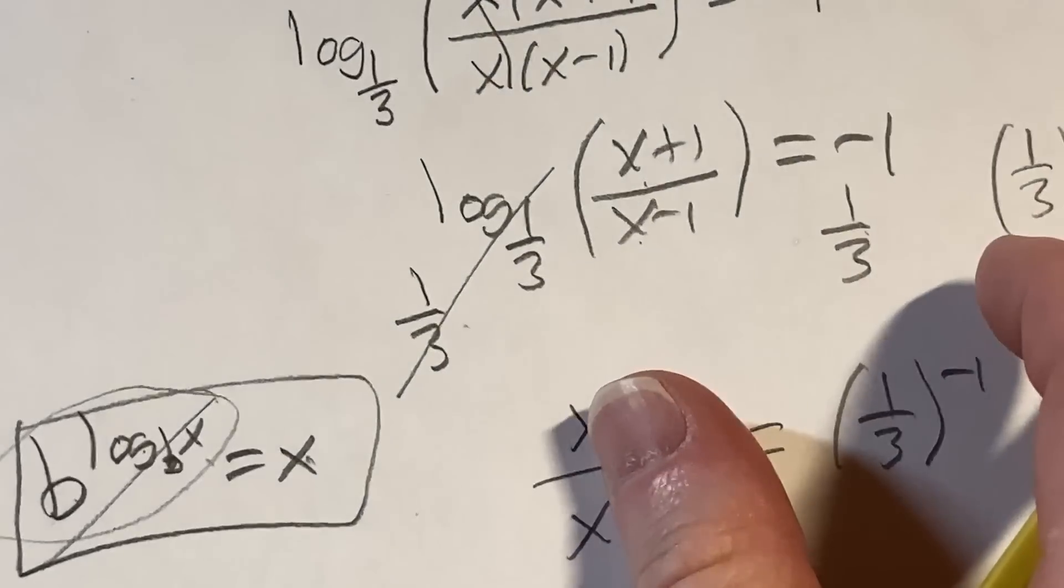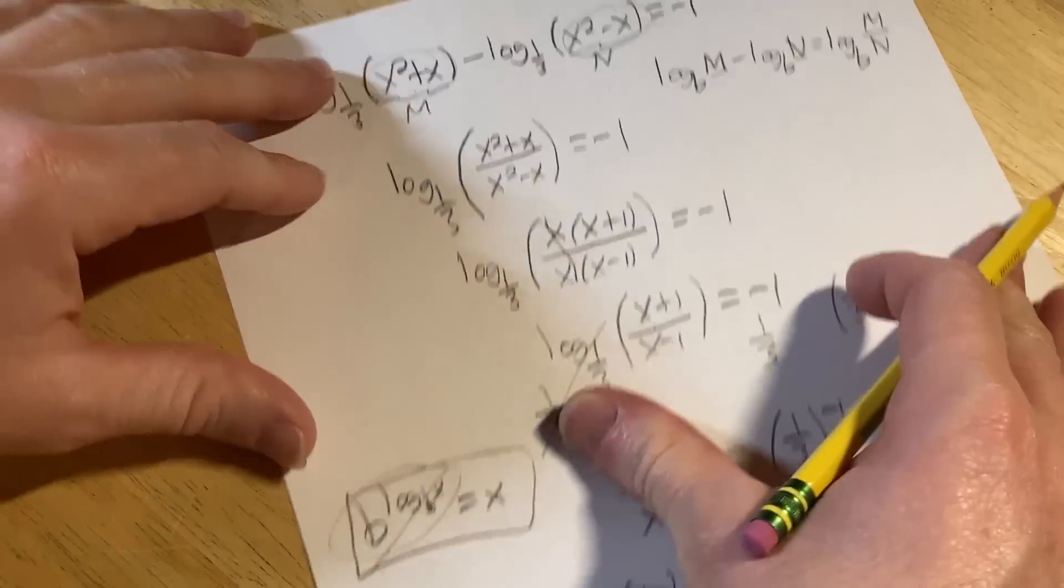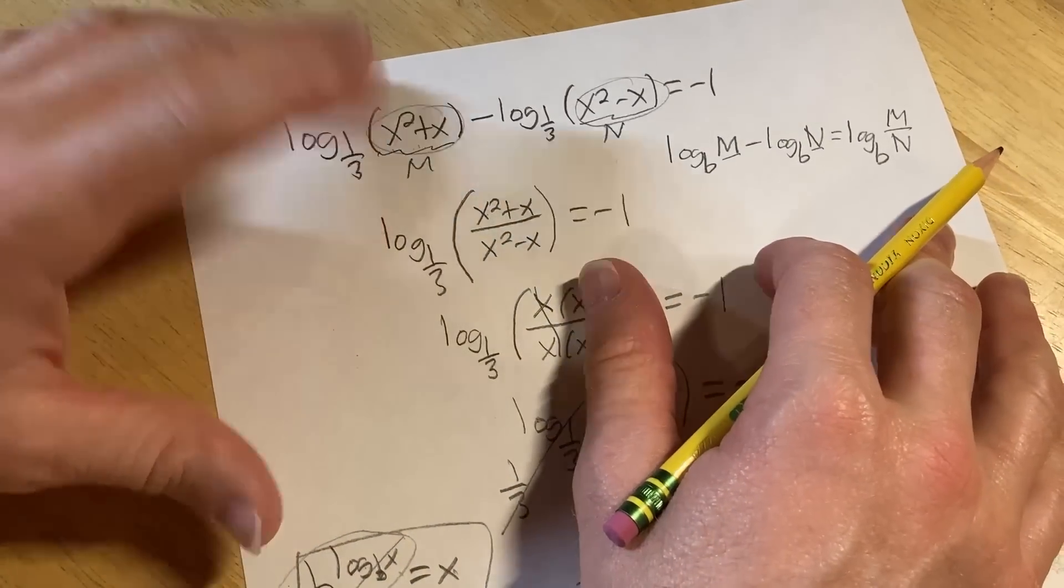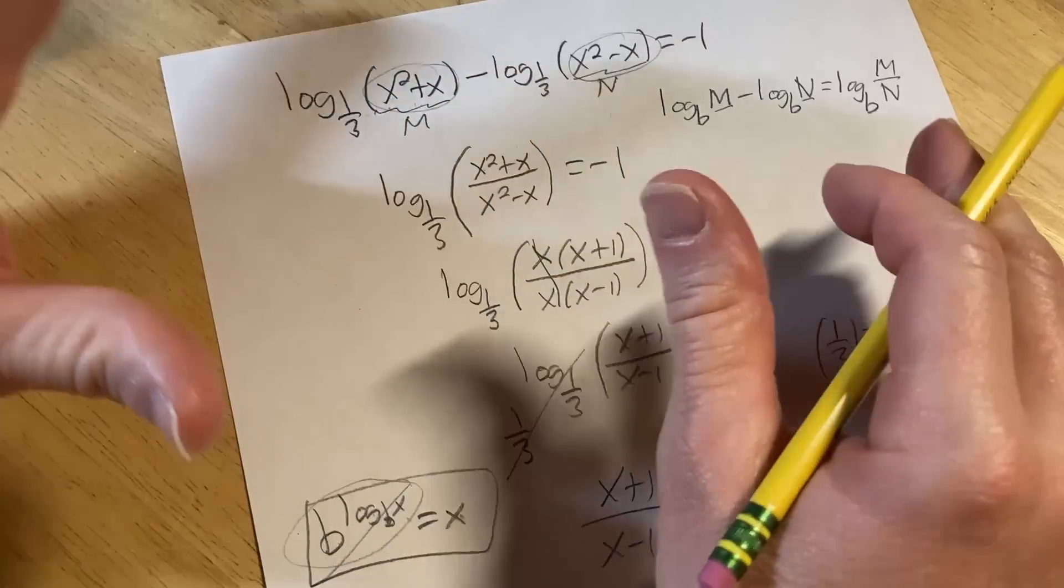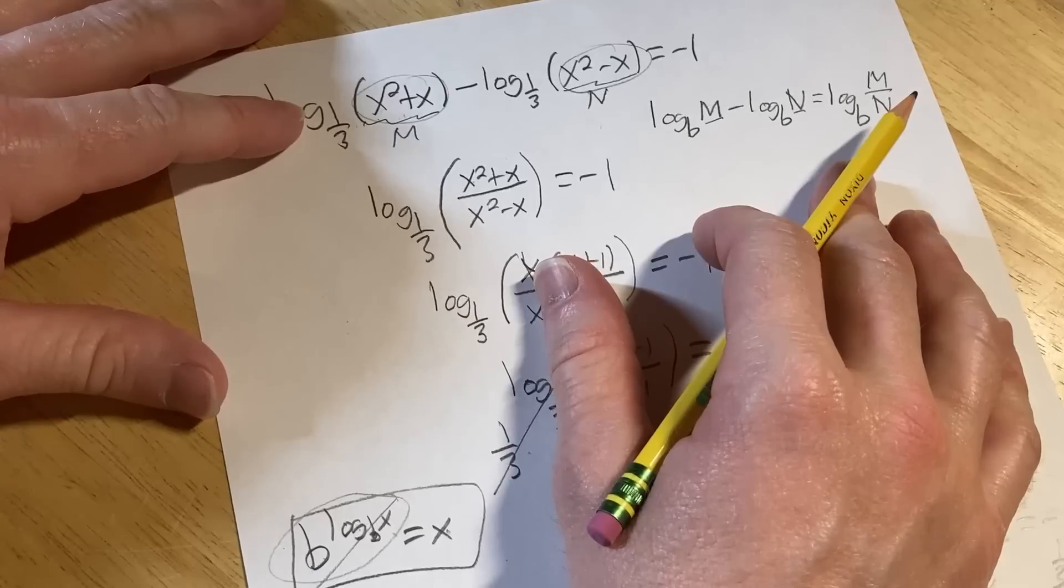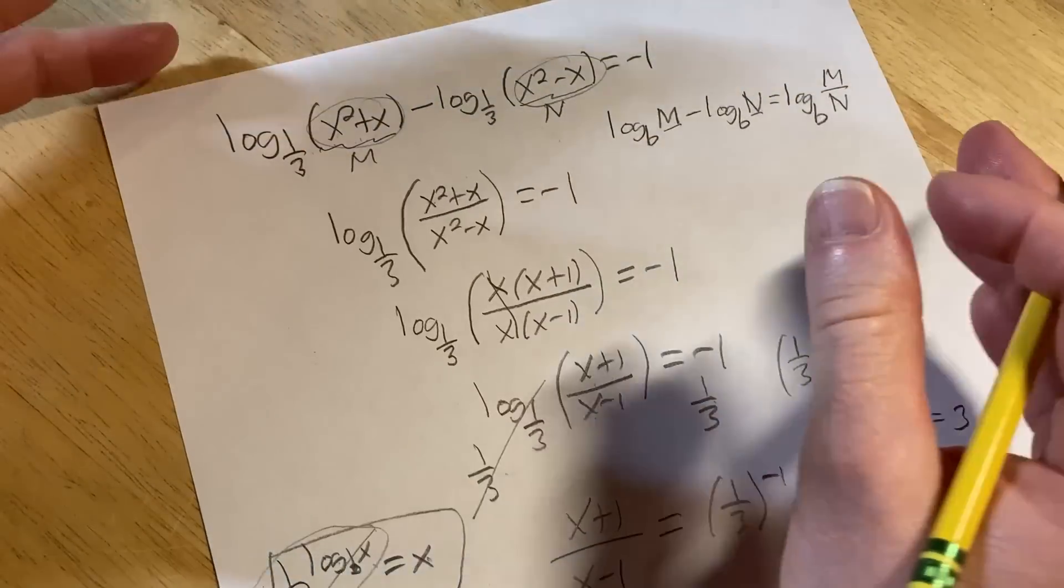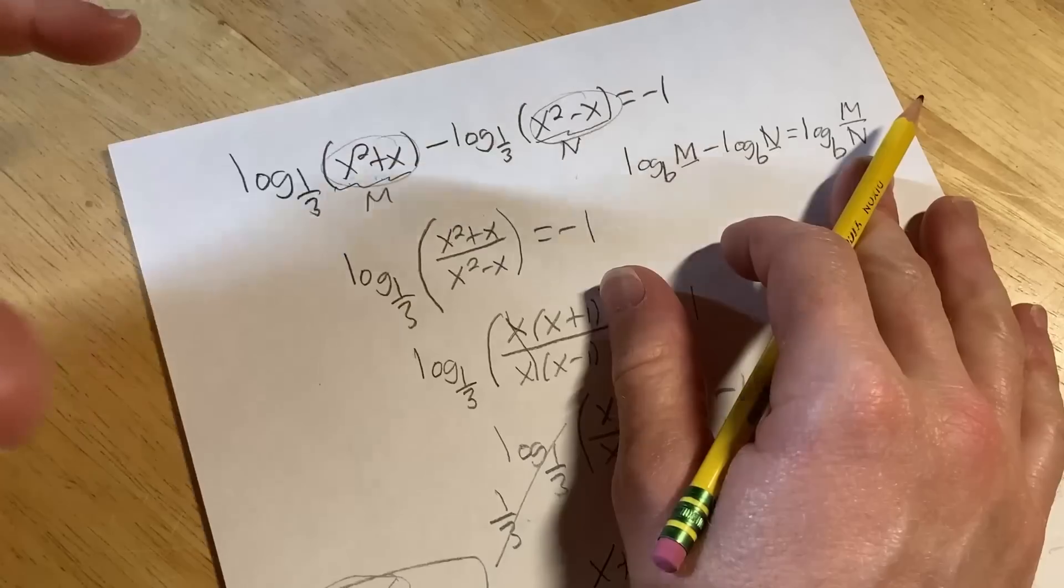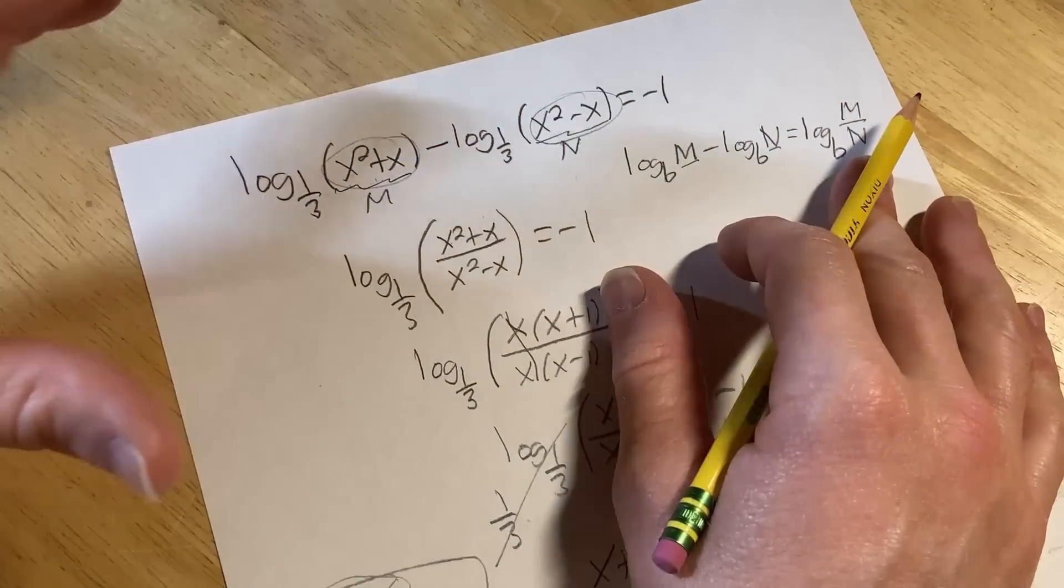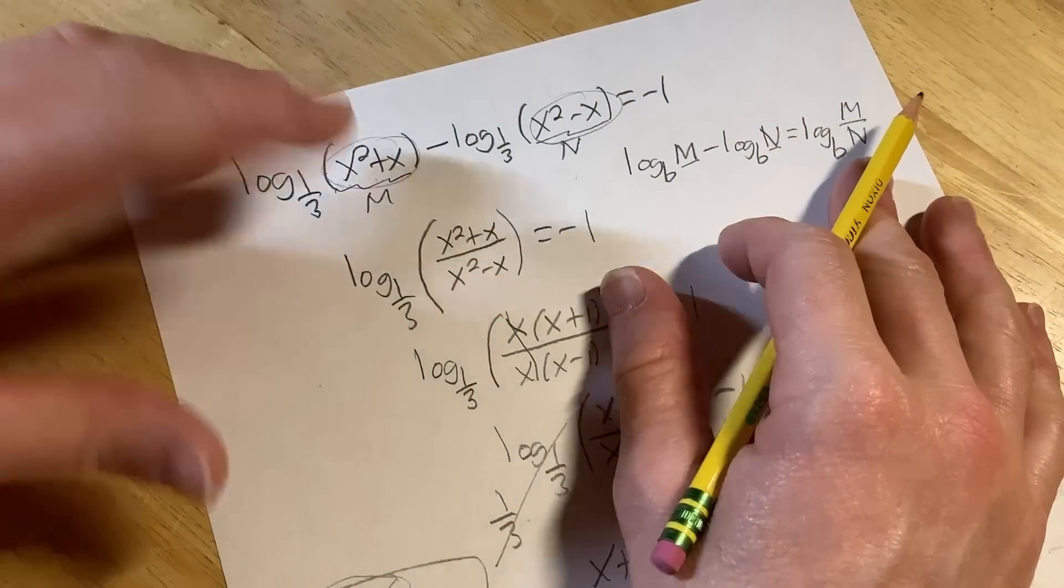So logarithms cause a lot of pain and grief for people. It caused me a lot of pain and grief, and it was pretty much the reason that I didn't get an A in college algebra. So if you're feeling like you're struggling with logarithms, hopefully this video has been helpful, and hopefully some of this made sense. I'm curious, when you took algebra, what was the hardest thing that you thought? What was like the hardest thing for you in algebra, or was it all easy? Leave a comment below.